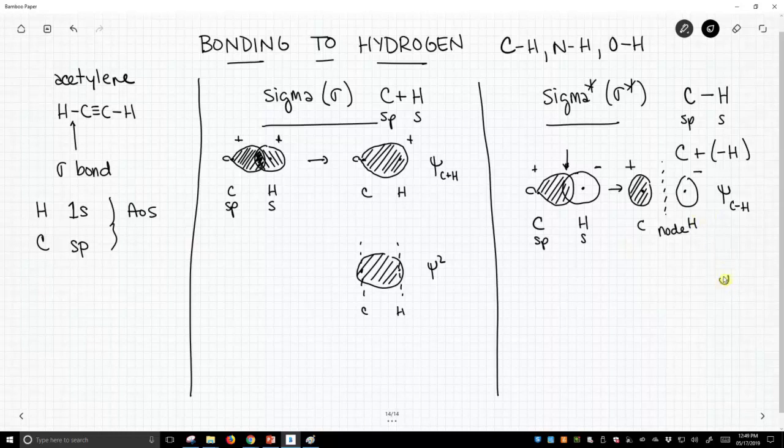Well, if we look at our psi squared for C minus H, we just shade everything. When we square the negative ends, they become positive. Where is our electron? It is not between the two nuclei. So this would be an unfavorable orbital. That's our sigma star, our anti-bonding orbital.